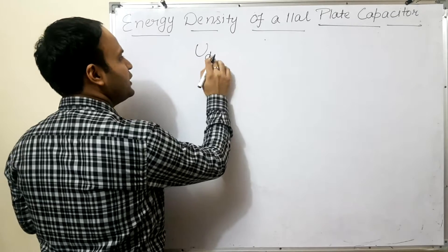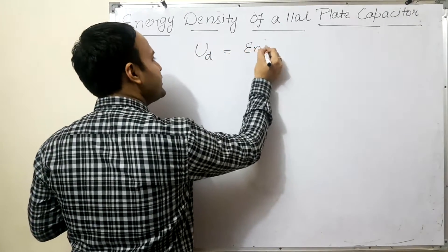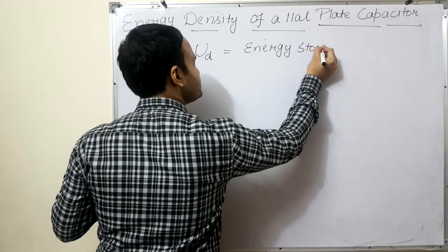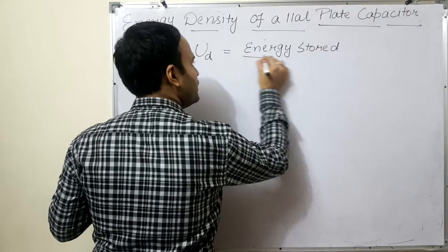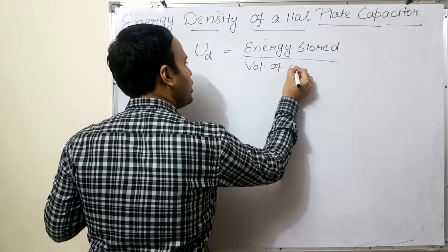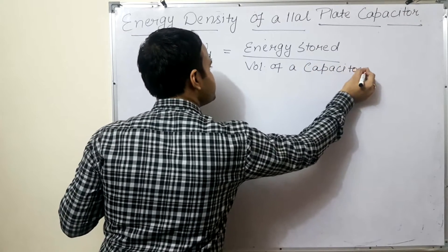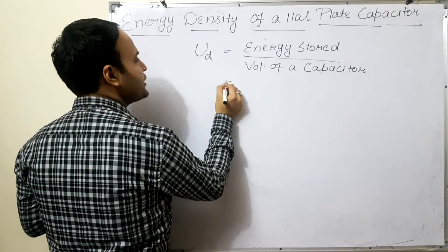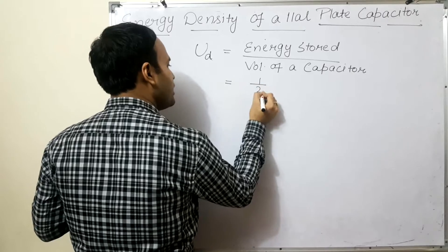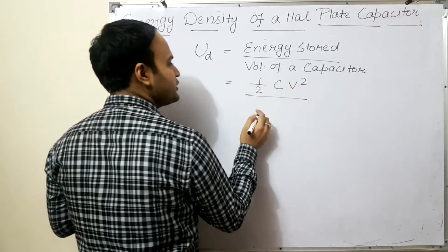Energy density is defined as the energy stored in the capacitor divided by the volume of the capacitor. We will find out how much energy is stored in a capacitor and what the volume is.